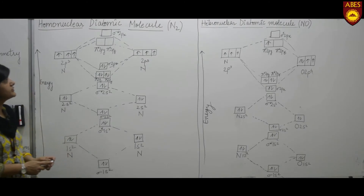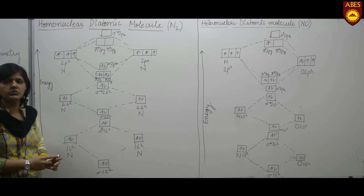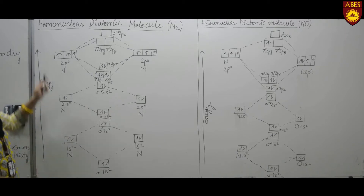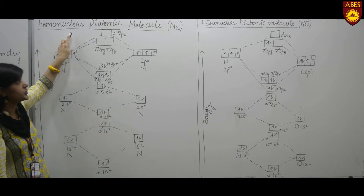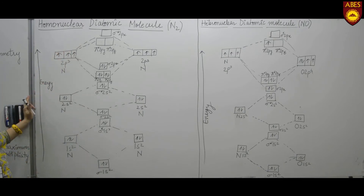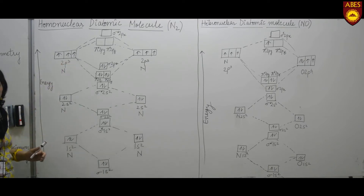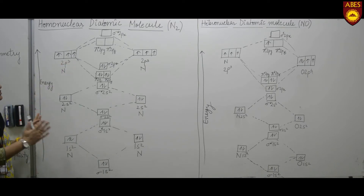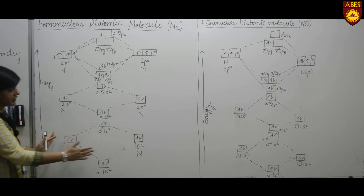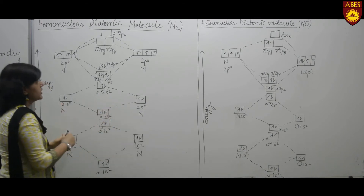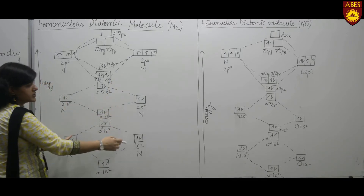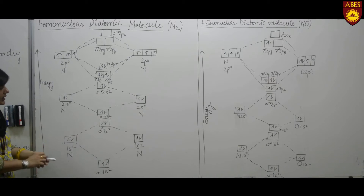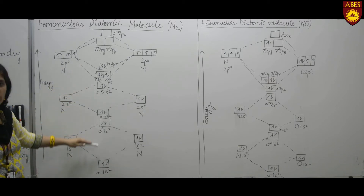Now let's discuss the formation of a molecule on the basis of molecular orbital theory. I am discussing the formation of a homonuclear molecule, which means a molecule that contains the same type of atoms. I am taking the example of the nitrogen molecule. For the formation of nitrogen molecule, we draw the molecular orbital diagram. In the molecular orbital diagram, on the extreme ends we draw the orbitals of atoms, and in the center we draw the orbitals of the molecule.